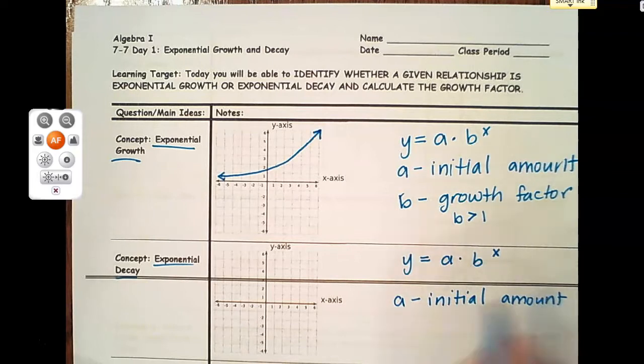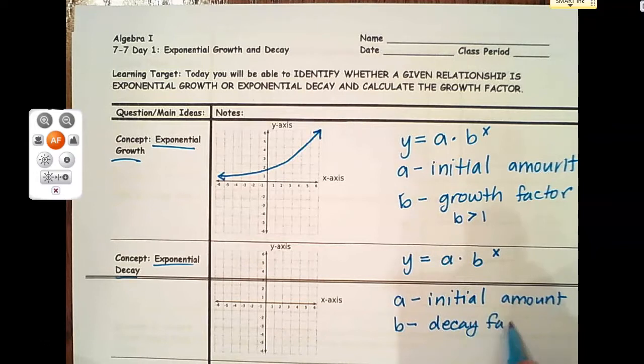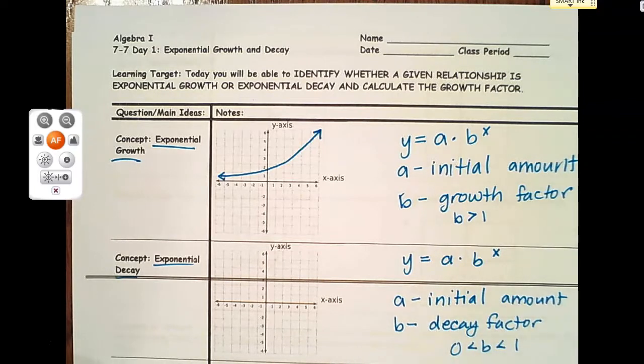a is still our initial amount, and b we're going to call the decay factor because b is between 0 and 1, like a fraction or a decimal. The format of the equation doesn't change - it's just that b value that determines whether it's a growth or a decay.